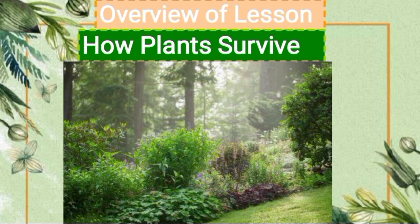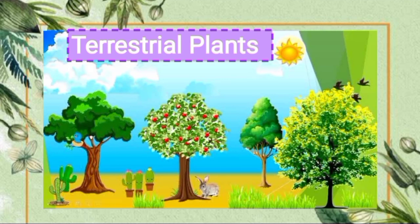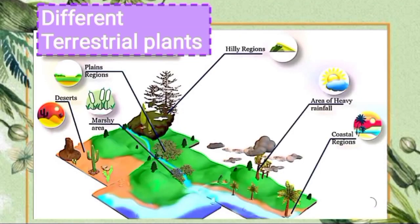That's how plants survive. Based on their habitat, plants can be classified into different types. The first type is terrestrial plants. These plants grow on land. Land has a variety of habitats like forest, mountain, plains, and deserts. Terrestrial plants can be further divided into groups: plants growing on mountains, plants growing in plains, plants growing in deserts, and plants growing in coastal regions.